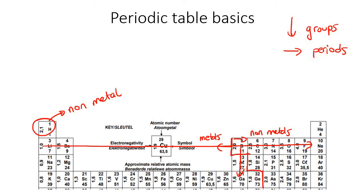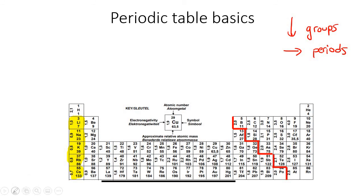Then the last thing I want to talk about is just the names of some groups. This first group is what we call the alkali metals. Then this group over here, the one next to it, those are called alkaline earth metals.